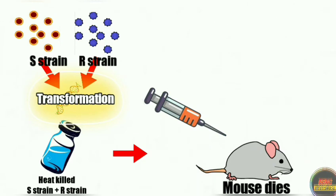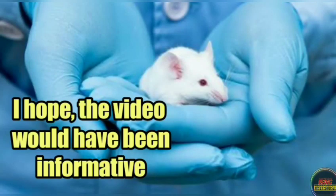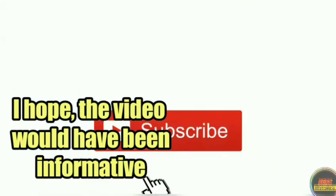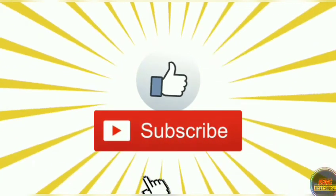From here Griffith concluded that DNA is the genetic material, as the DNA of the virulent S-strain could kill the mice. So with this, our topic on Griffith's experiment is over. I hope you understood the whole topic clearly. If you found this video informative, please hit the like icon and don't forget to subscribe to my channel.